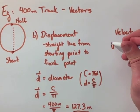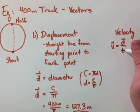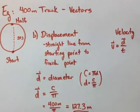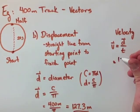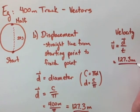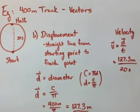Velocity is the same as speed, but we use displacement instead of distance. So here we'll go 20 seconds again. We'll use 127.3 over 20, and we'll end up getting 6.37 meters per second.